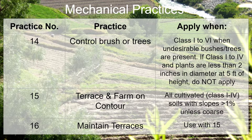Practice number 15: Terrace and farm on contour. This should be applied for all cultivated soils that would be class one through four and not specified as a woodland, with slopes greater than one percent unless your surface texture is coarse.